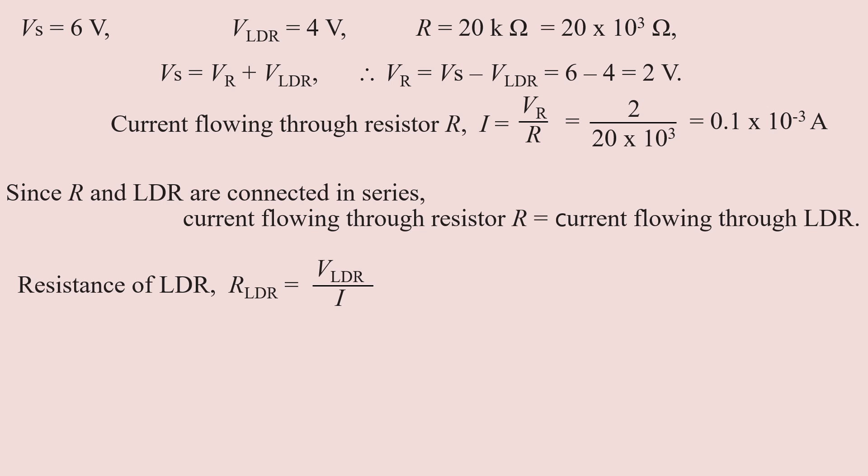Substituting the values: V_LDR divided by I, with the current 0.1 × 10⁻³ amperes, the resistance of the LDR is equal to 40 × 10³ ohms, which is 40 kilohms.